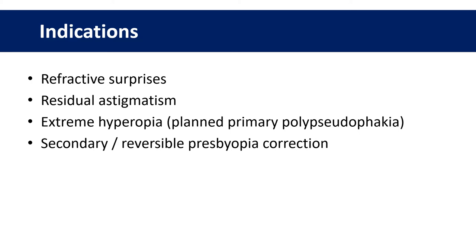Less commonly, they can be used as part of a planned primary procedure in cases where an eye requires a higher powered IOL than is available — so-called primary polypseudophakia. And a more recent use is in presbyopia correction, where a multifocal piggyback lens can be implanted either after cataract surgery or as part of the primary procedure on top of a normal monofocal lens to provide reversibility.